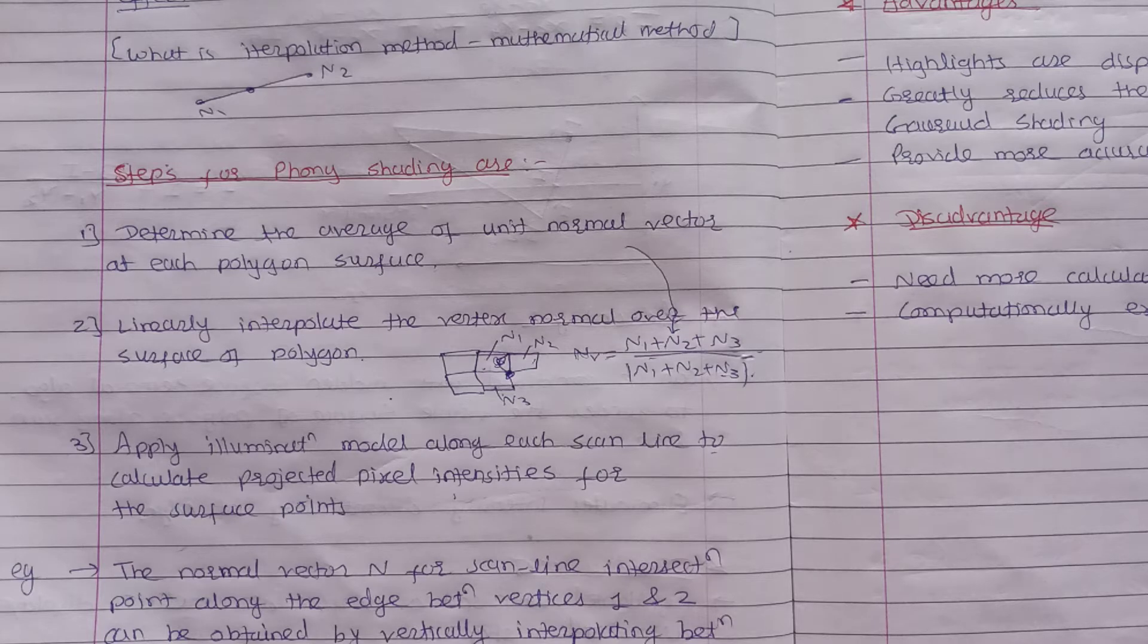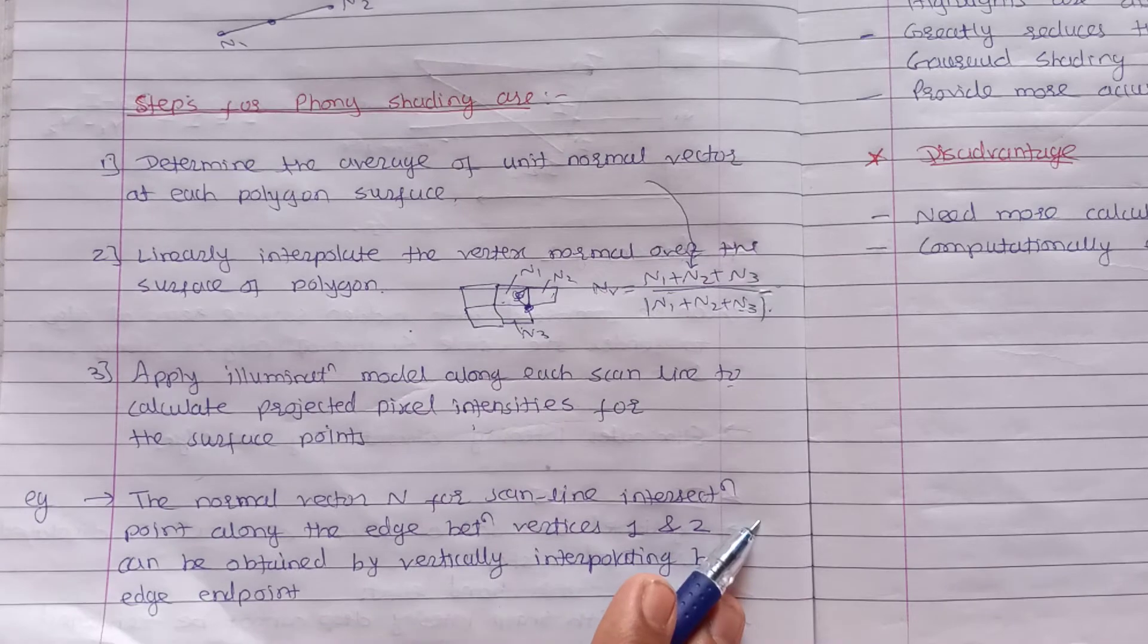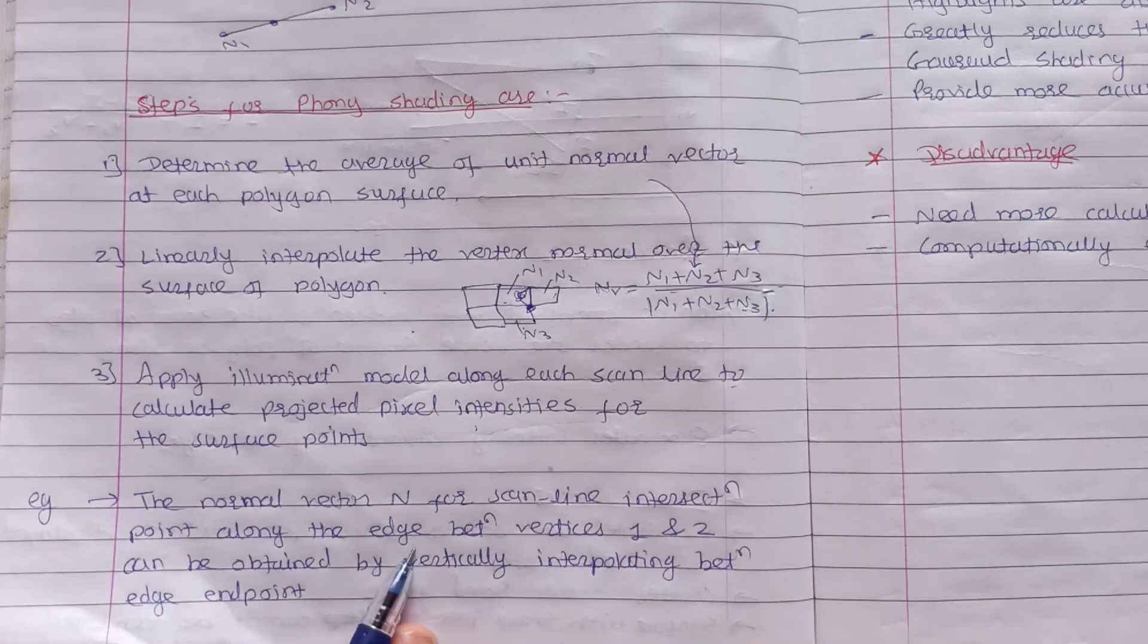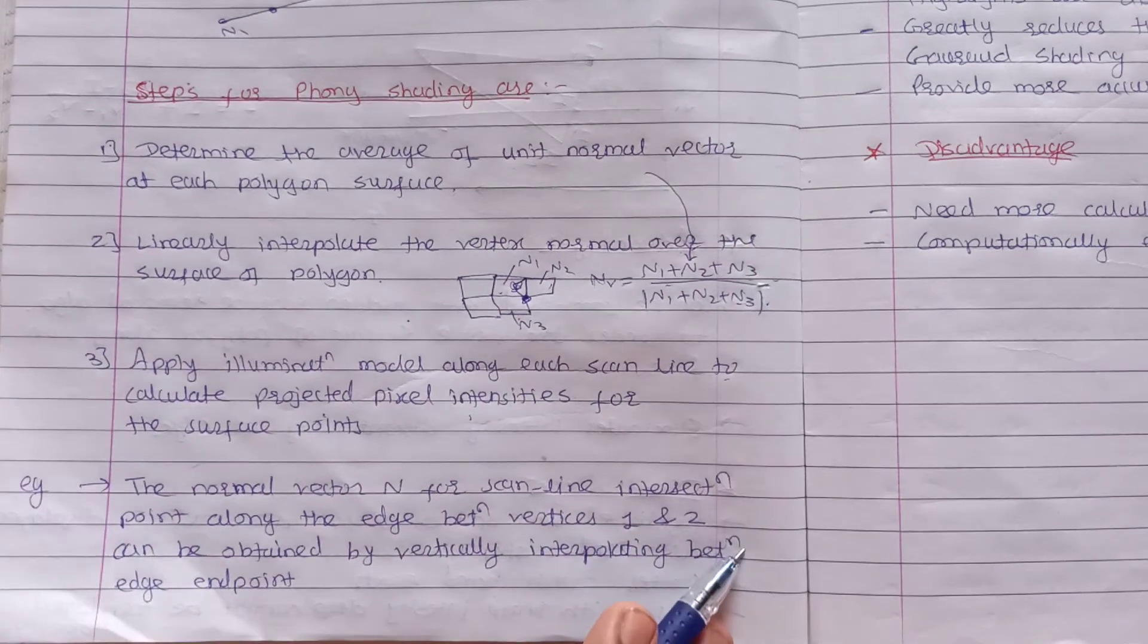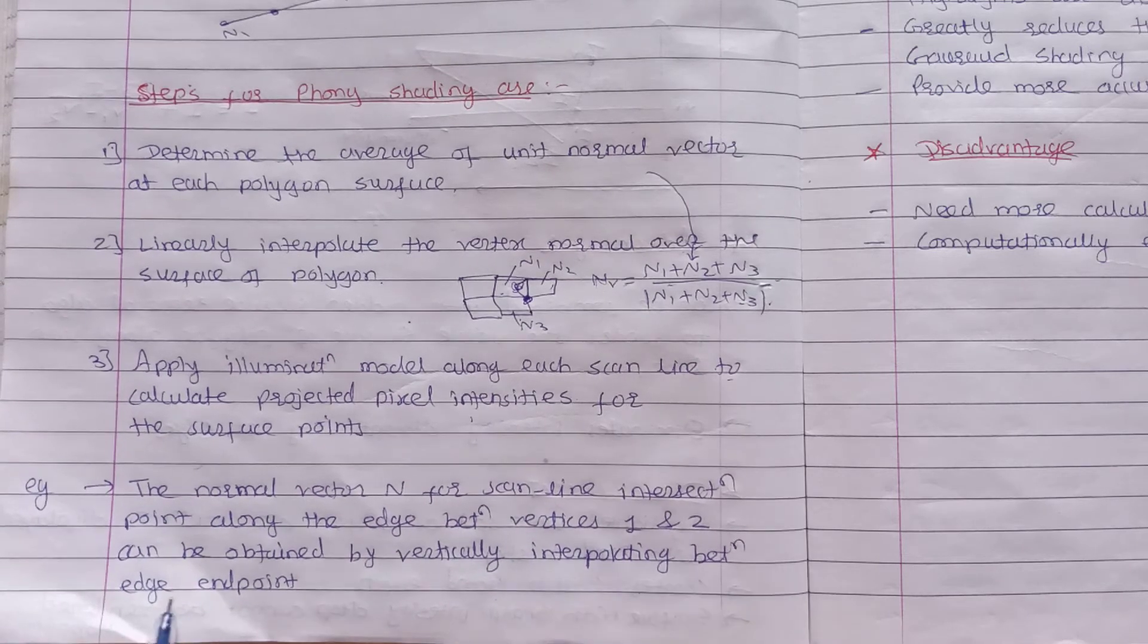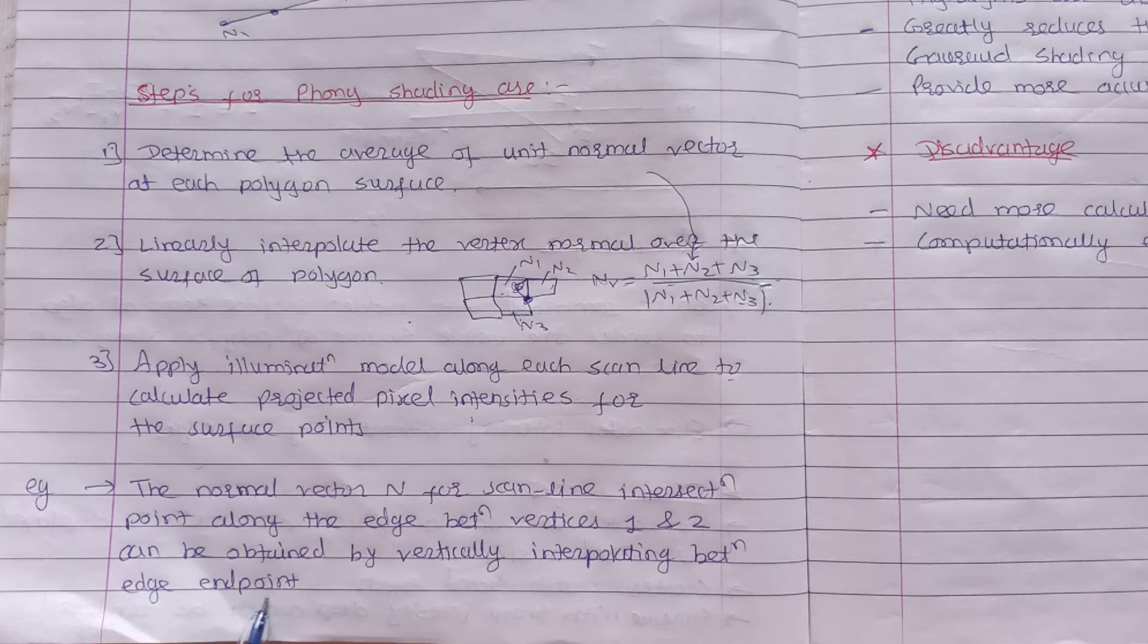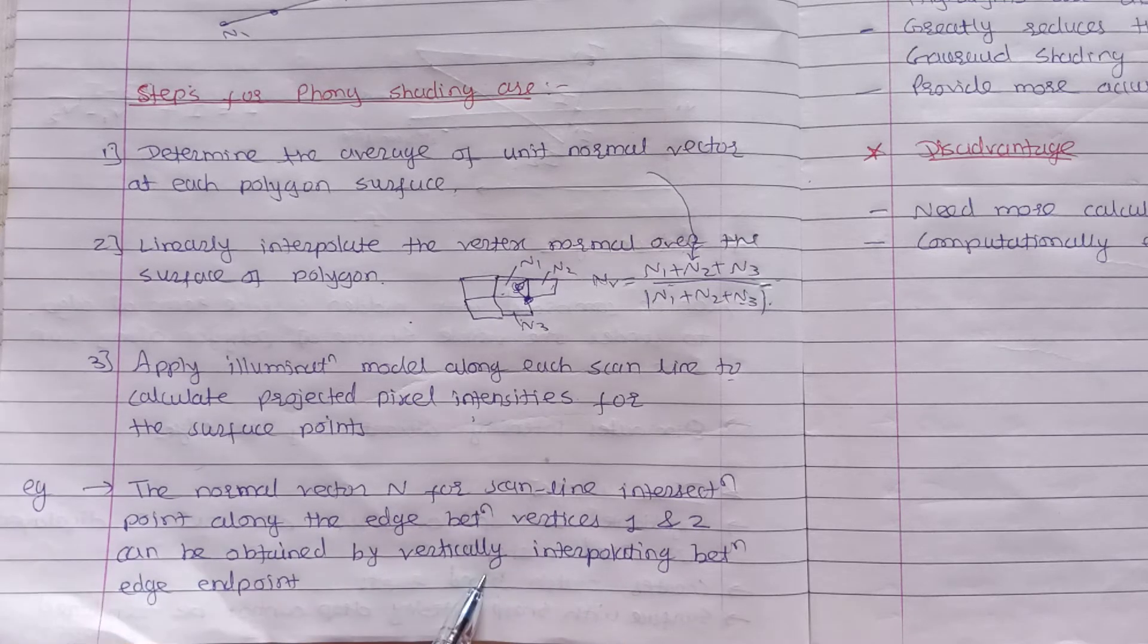For example, we can find out the edge between vertices 1 and 2 by vertically interpolating between edge endpoints. Using edge endpoints we can find out the interpolation points along the edge between vertex 1 and 2.